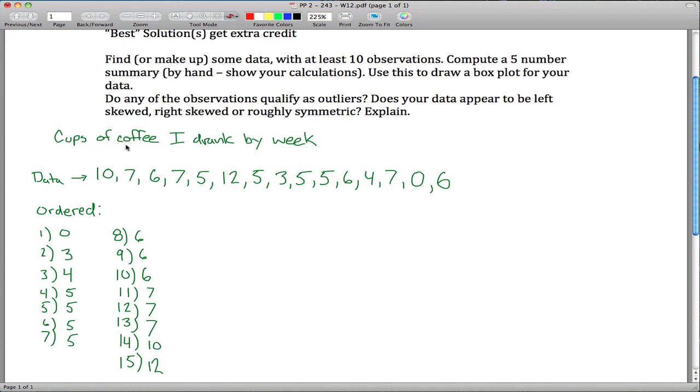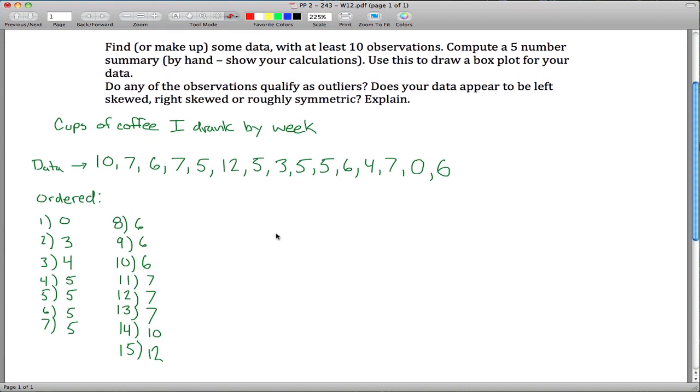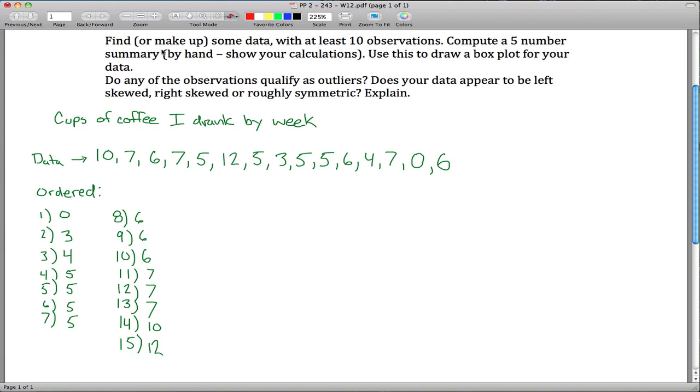My data was cups of coffee I drank by week. Here's all the data right here, and since I looked ahead and saw that I have to compute a five number summary, and I know that includes medians and quartiles, I put these all into order. I did all that before I started the video just so you wouldn't have to watch me write all those up, so now let's start.